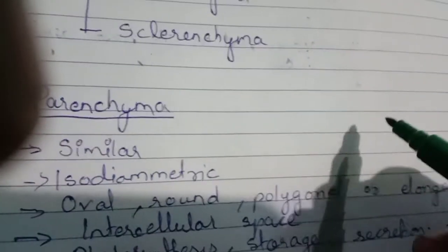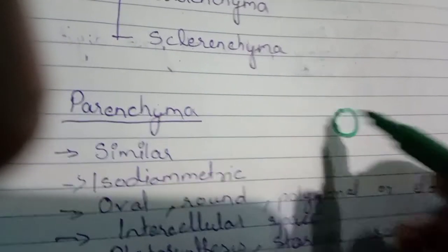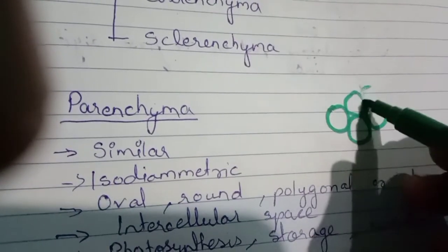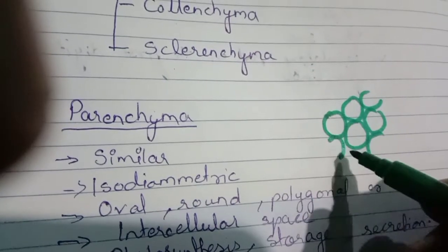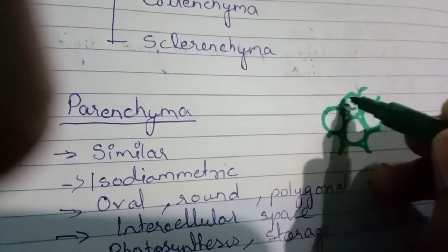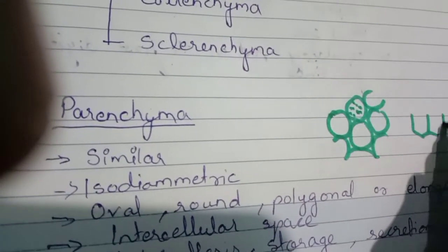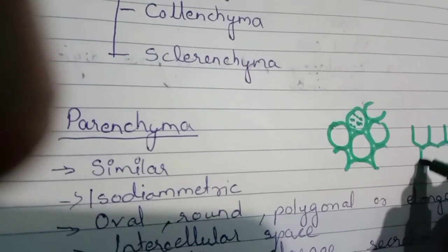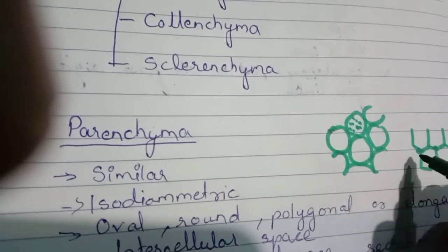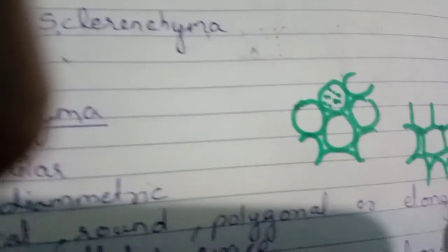This is how we can draw parenchyma. If it is round-shaped, you can draw it like this with intercellular space. If it consists of chloroplast, it will do the function of photosynthesis. Sometimes if it is tightly packed, we can draw it that way, but normally it will have intercellular space in between the cells.